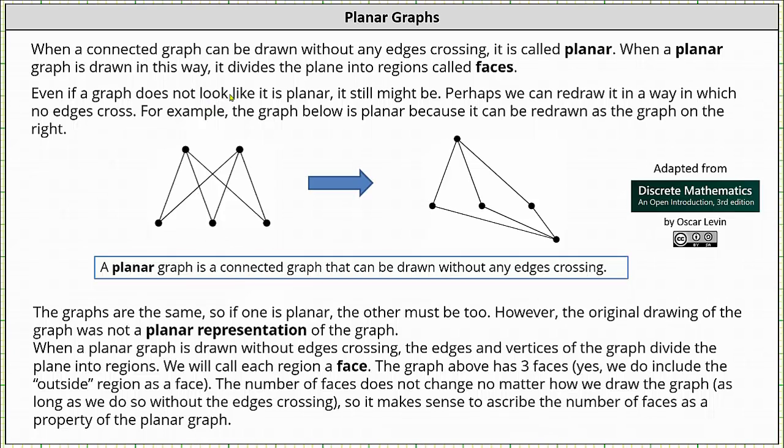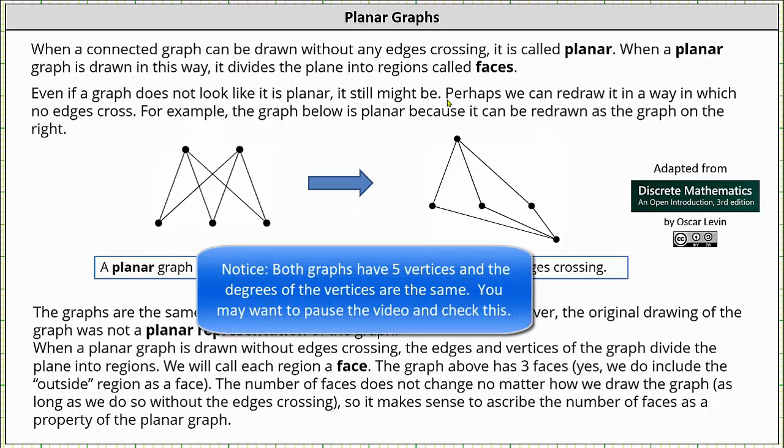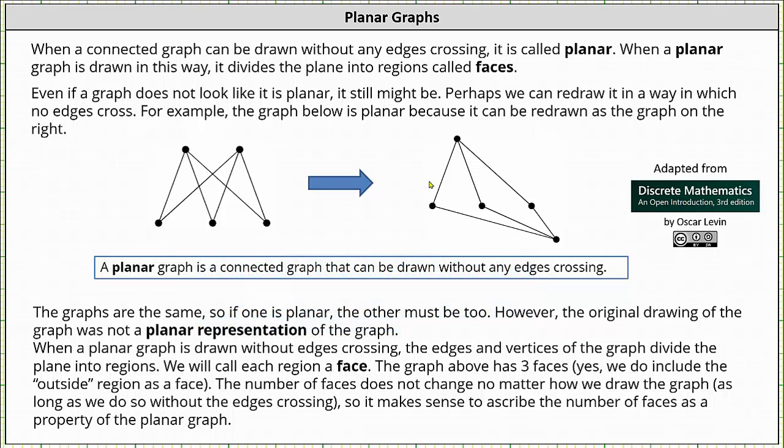Even if a graph does not look like it is planar, it still might be. Perhaps we can redraw it in a way in which no edges cross. For example, the graph below is planar because it can be redrawn as the graph on the right. The two graphs are the same. So if one is planar, the other must be too.